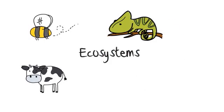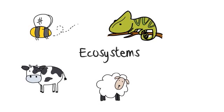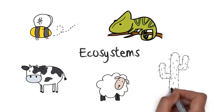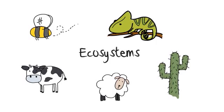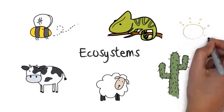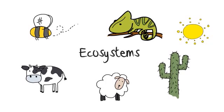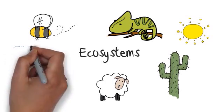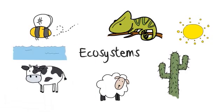Think of it like a chain. Link by link, the bits and pieces of an ecosystem come together. Sunlight, plants, insects and animals help to keep the chain strong through energy flows and nutrient cycles. If one link of the chain is broken, the whole system is weaker and gradually the other links weaken as well.